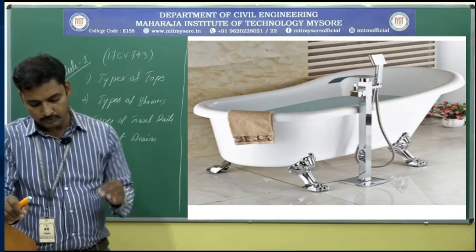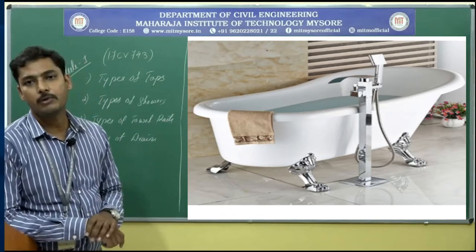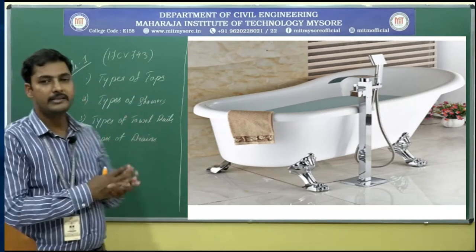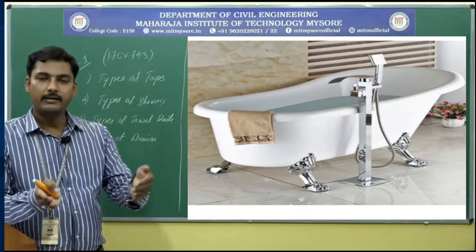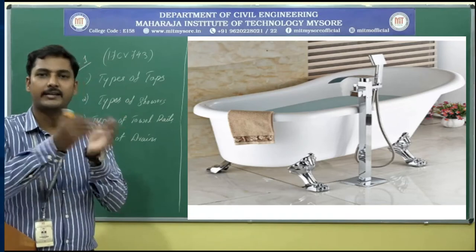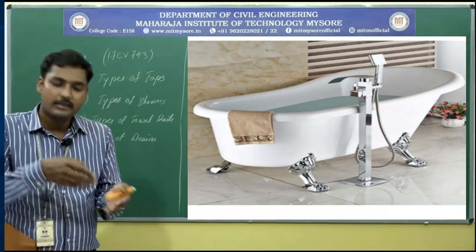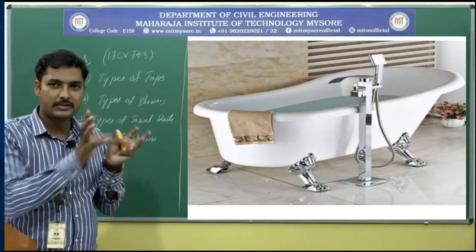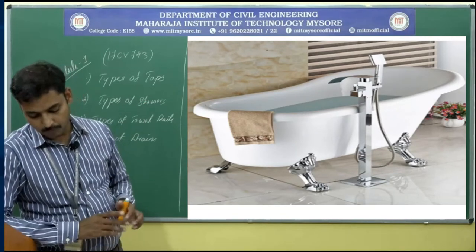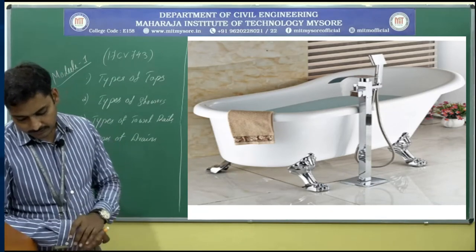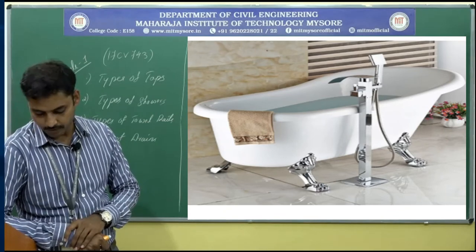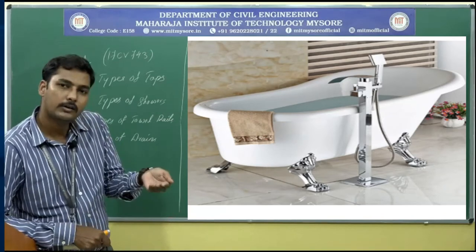The next type is floor mounted taps. These are preferred in bathtubs, where the pipes and plumbing pipelines are fitted from the floor with suitable connections at the inlet. The entire assembly is drilled from the slab itself — no projections and nothing hidden inside the wall. Instead of hiding plumbing like wall mounted taps, the pipelines are actually exposed from the floor up to the tub.